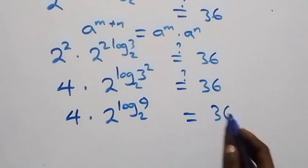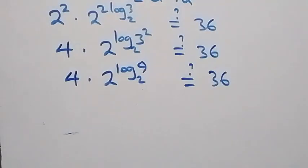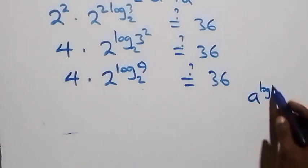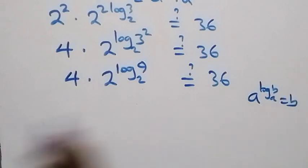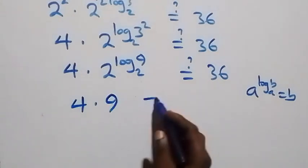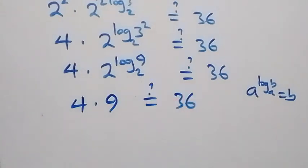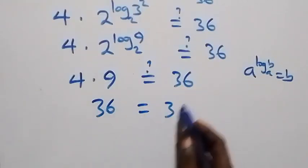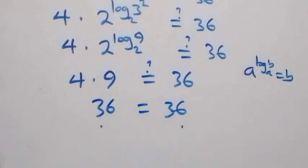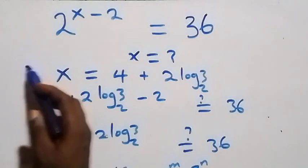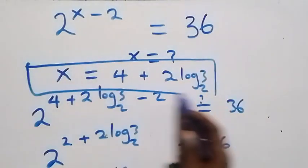Using the identity a raised to power log b to base a equals b, we get 4 times 9, which equals 36. And 4 times 9 gives 36, which equals 36. Left-hand side equals right-hand side, and hence we can conclude that x equals 4 plus 2 log 3 base 2 satisfies this given problem.